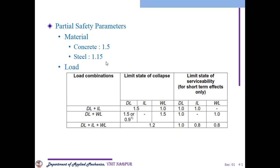For the load combinations: if we have dead load plus live load, in collapse you need to use a partial safety factor of 1.5. If it is dead load plus wind load, you need to use the factor 1.5 or 0.9. If you need to use dead load plus live load plus wind load, then your factor would be 1.2. You multiply these factors with all the respective load additions to get a factored load.